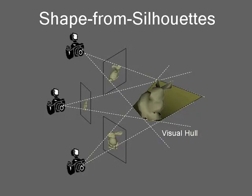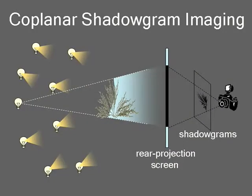In theory, a shape-from-silhouettes approach may be used to reconstruct the visual hull of intricate objects, provided we have a sufficiently large number of views. An easy way of capturing a large number of silhouettes is illustrated here: a small light source is moved around a stationary object, and the shadows cast by the object on a single planar rear projection screen are imaged by a camera.